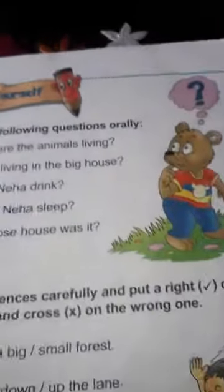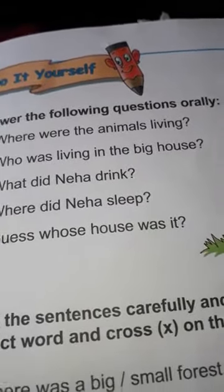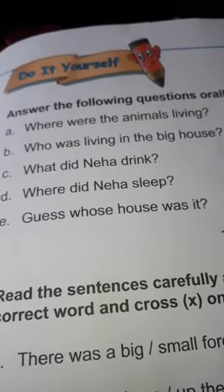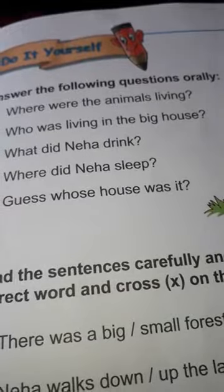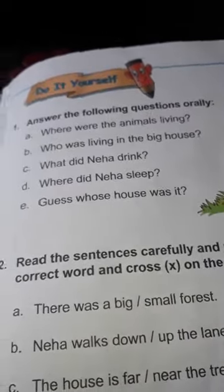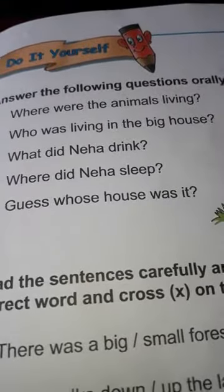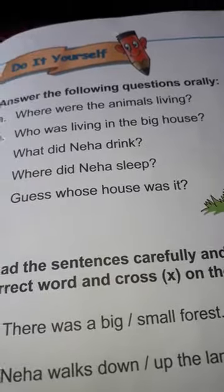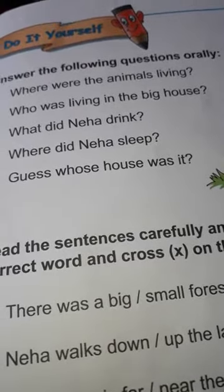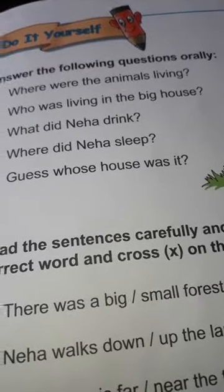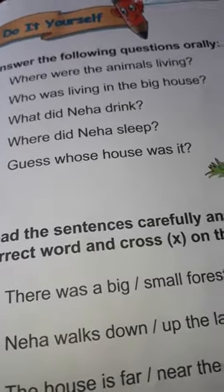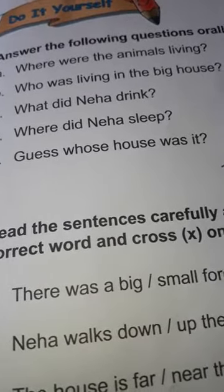First question: where were the animals living? Animals kaan rathe the? Animals were living in the forest. Second question: who was living in the big house? Neha was living in the big house. Third question: what did Neha drink? Neha drank the soup. Fourth question: where did Neha sleep? Neha slept on the small bed — ek chota sa bed tha, usi ke oopar Neha soh gai thi.